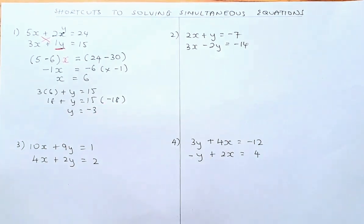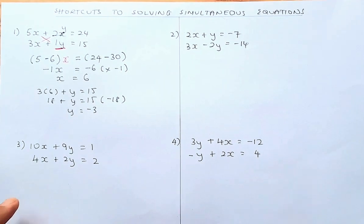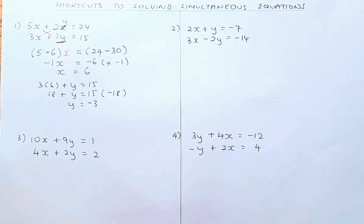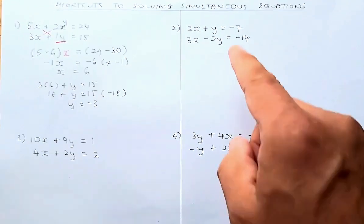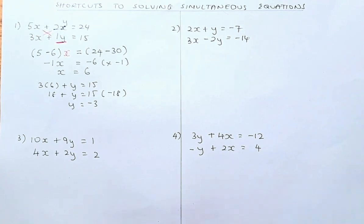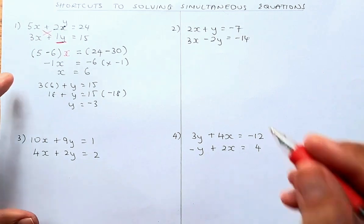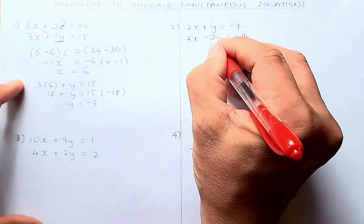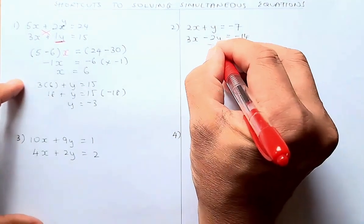So that is how you do it. Now we shall do the second example. The second example is on the right-hand side here. So 2x plus y is equal to minus 7, and 3x minus 2y is equal to minus 14. So the pivot is this number here — minus 2y.